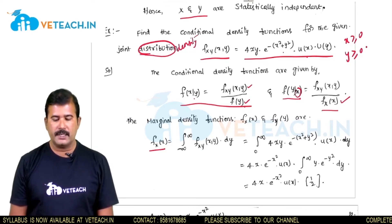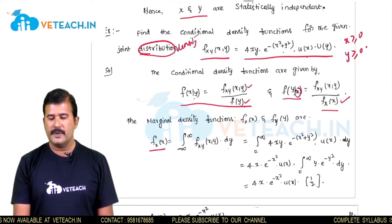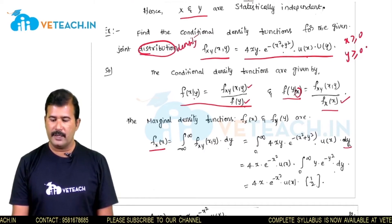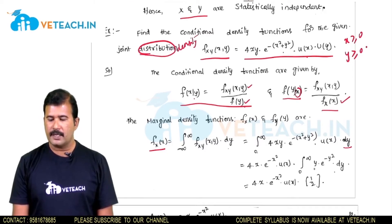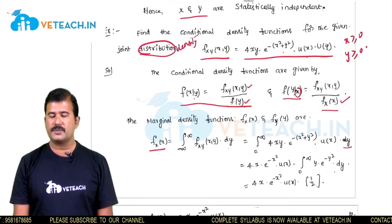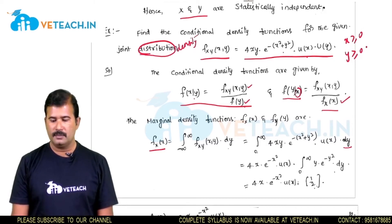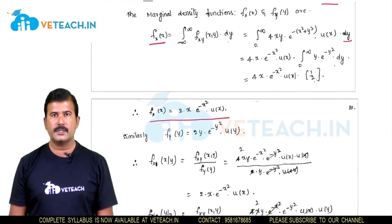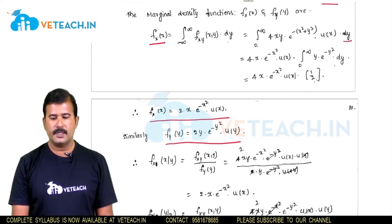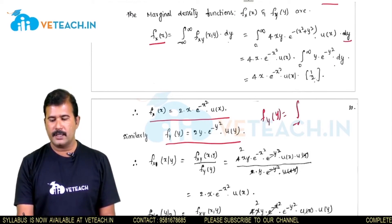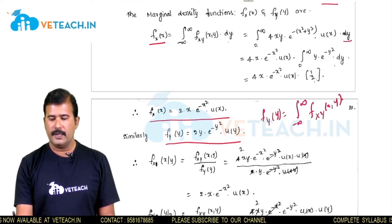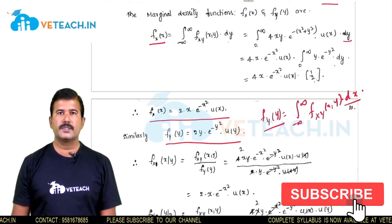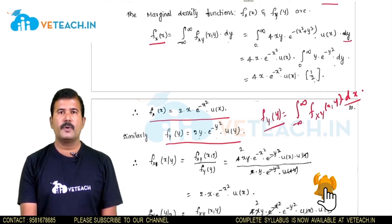f_x(x), the marginal density in x, is found by integrating the joint density with respect to y, with limits 0 to infinity. Since integration is with respect to y, terms involving x and the constant 4 are treated as constants. The remaining term is the integral of y · e^(−y²) dy from 0 to infinity, which evaluates to 1/2. After simplifying, f_x(x) = 2x · e^(−x²) · u(x). Similarly, f_y(y) is evaluated by integrating the joint density with respect to x, giving f_y(y) = 2y · e^(−y²) · u(y).